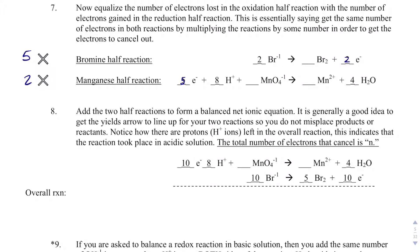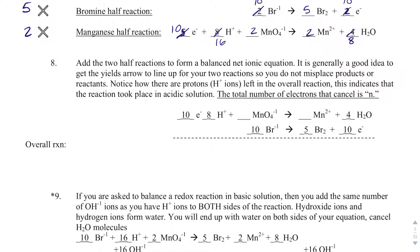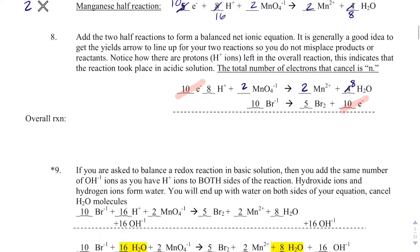When I multiply by 5 and by 2, the bromine reaction coefficients become 10 bromides, 5 Br₂, and 10 electrons. The manganese reaction coefficients become 10 electrons, 16 H⁺, 2 permanganate, 2 Mn²⁺, and 8 waters. Now I look at what cancels — the electrons absolutely cancel, and nothing else appears on opposite sides.